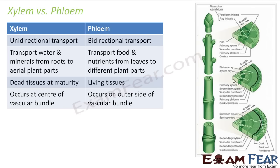Xylem occurs at the center of the vascular bundles, whereas phloem occurs on the outer side. You can see here a cross-section of a vascular bundle. These are the layers of xylem, and the outer layers are the layers of phloem. So the xylem lies towards the center and the phloem lies towards the outer side.